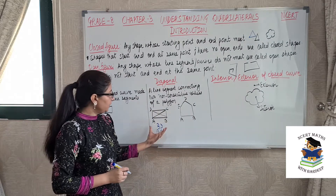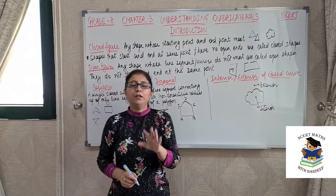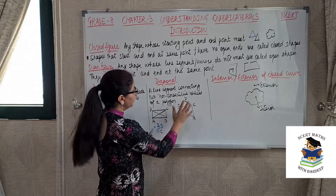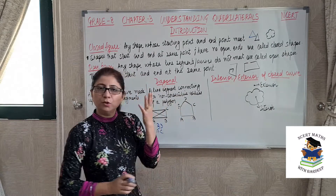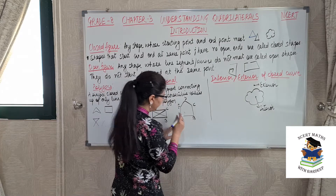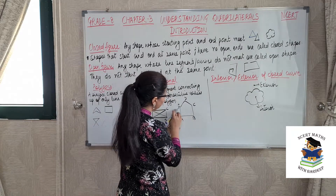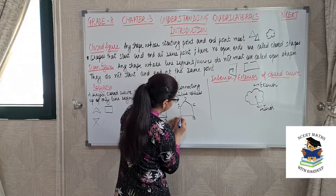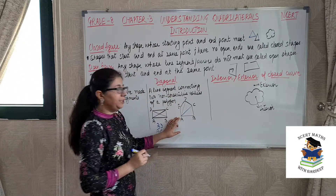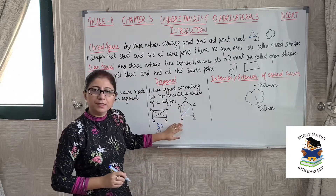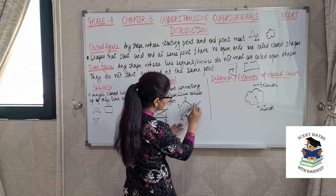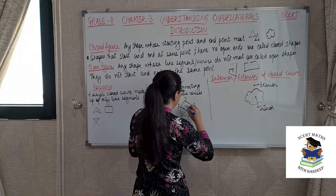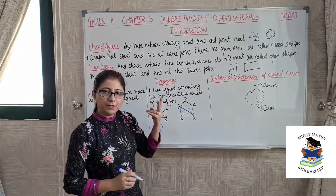So we can see here that in rectangle ABCD, we have only two diagonals. But it is not compulsory that every figure should have two diagonals — it depends on the number of vertices of your polygon. For example, in this pentagon ABCDE, a five-sided polygon, if we start from vertex A, we cannot use AB and AE as diagonals because they are edges. So we join A with non-consecutive vertices C and D. These two diagonals are for vertex A.